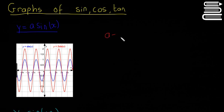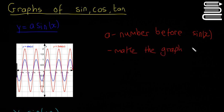So a is our number before sine of x. It's going to make the graph bigger. Or else you can say it changes the range.